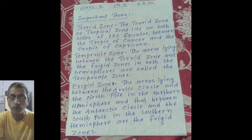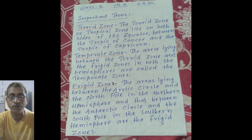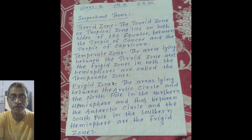1. Torrid zone. The Torrid zone or Tropical zone lies on both sides of the equator between the Tropic of Cancer and the Tropic of Capricorn.